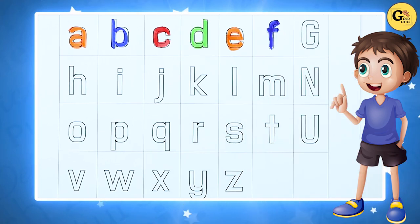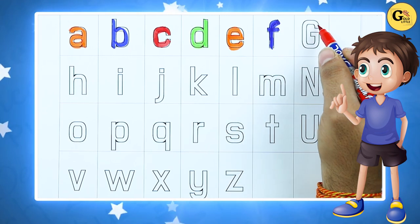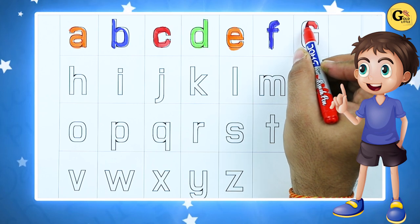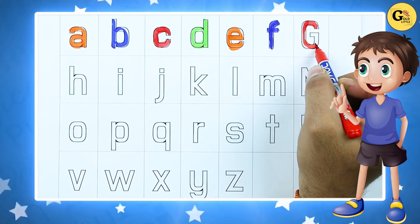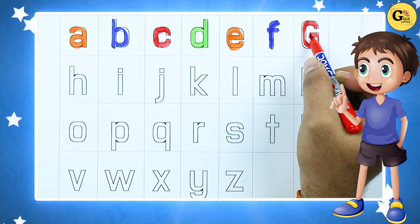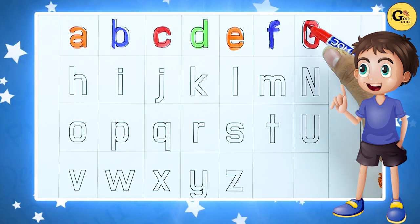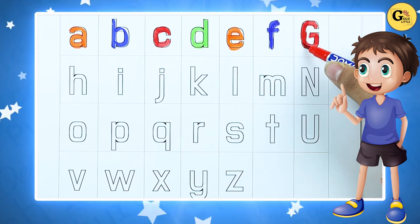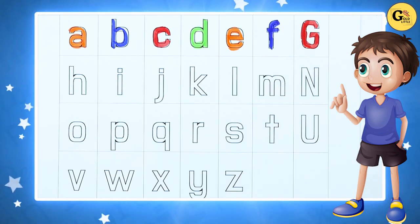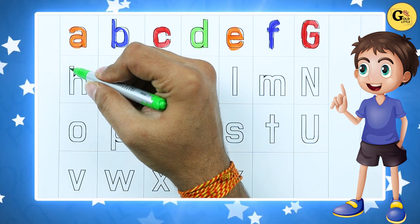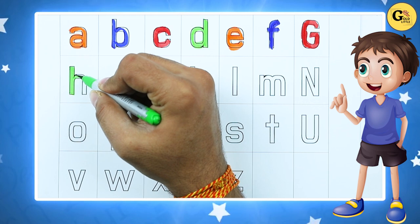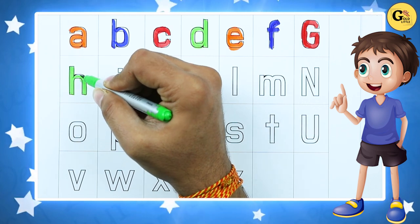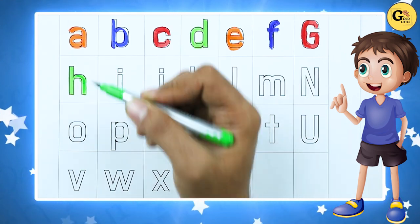G — G for goat. It's a G, G for goat. H — H for hen. It's a H, H for hen.